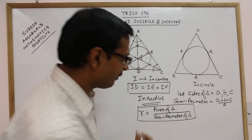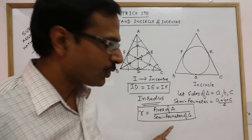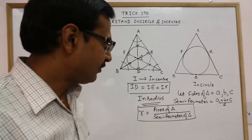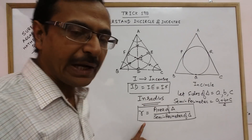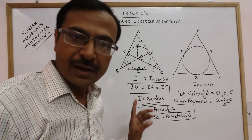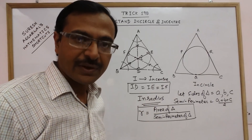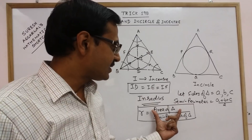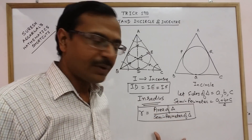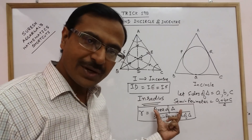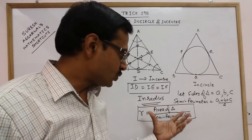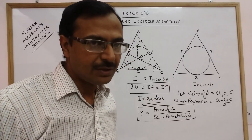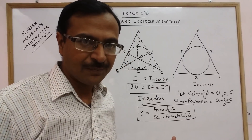The radius of the incircle r is given by dividing the area of the triangle by the semi-perimeter of the triangle. This is a very important concept for competitive exams. The formula for finding the inradius is the ratio of the area of the triangle to the semi-perimeter of the triangle.